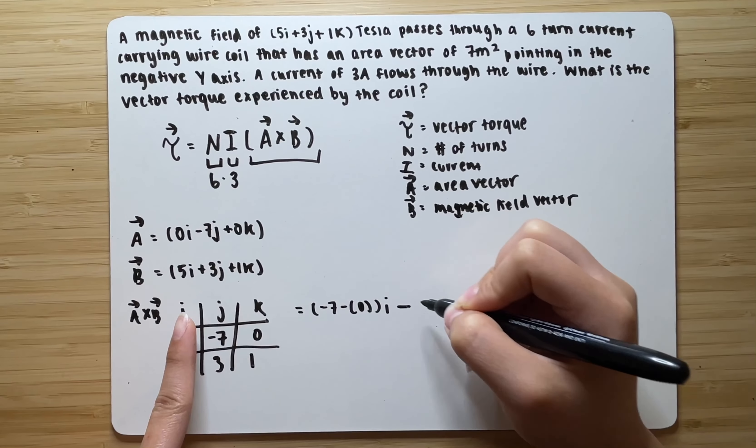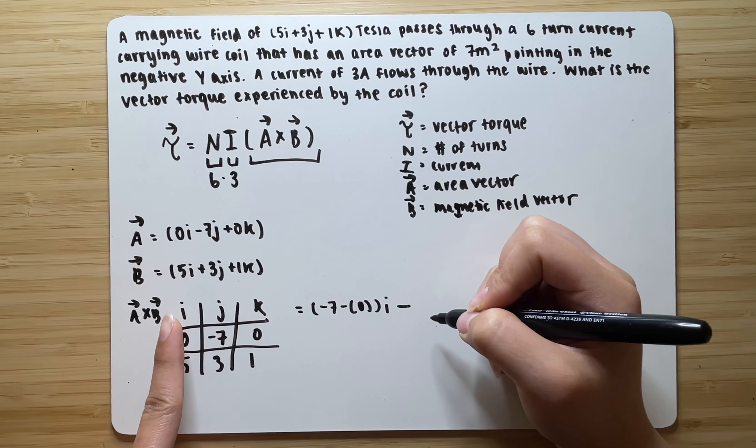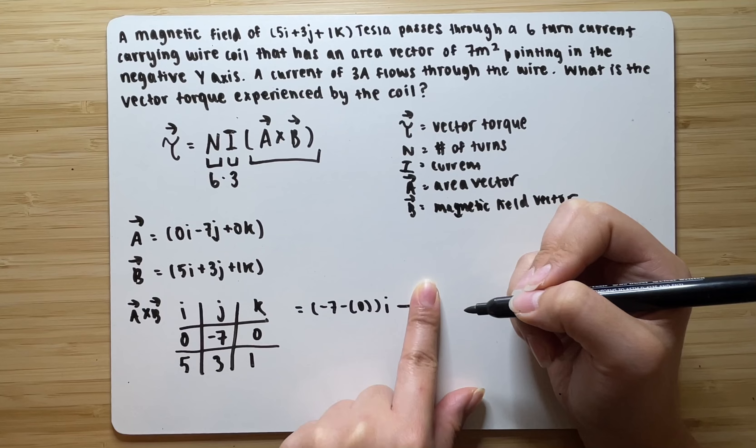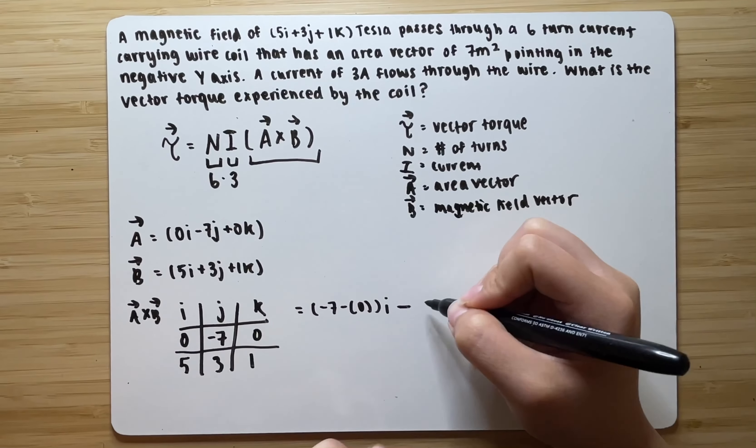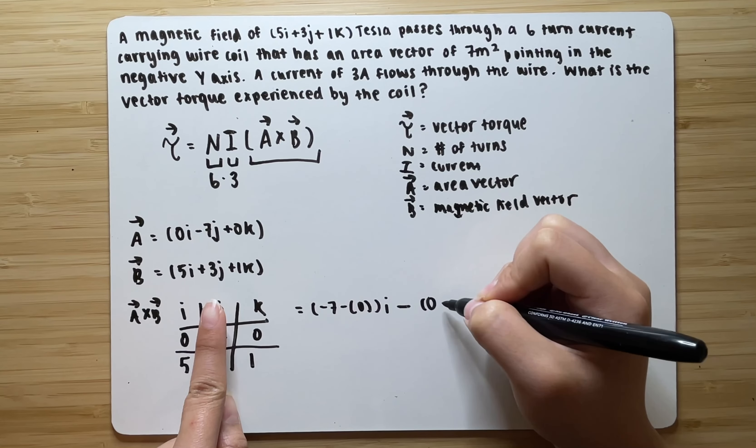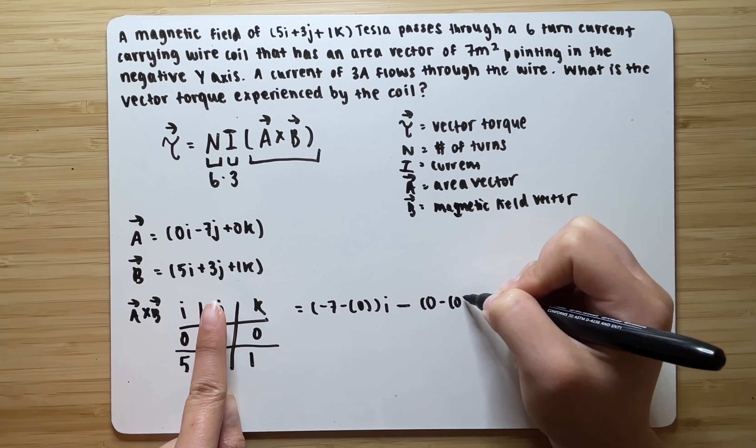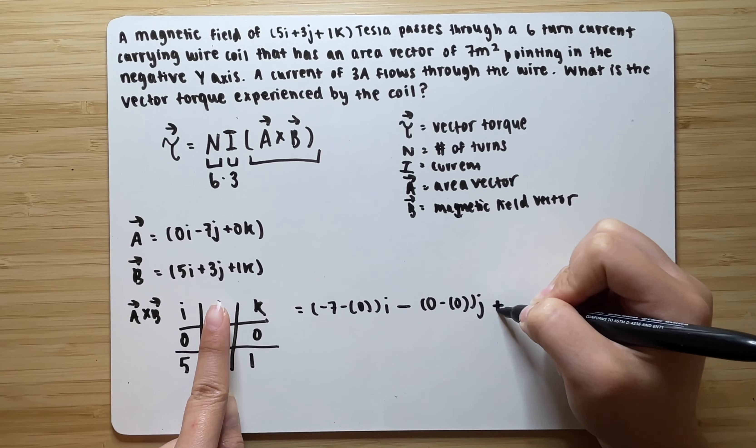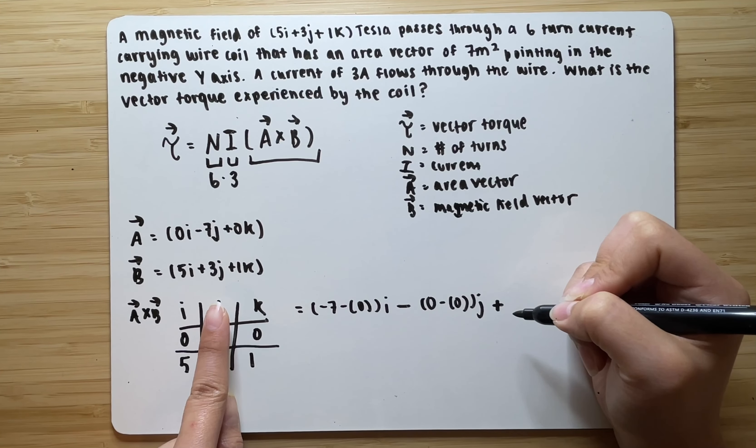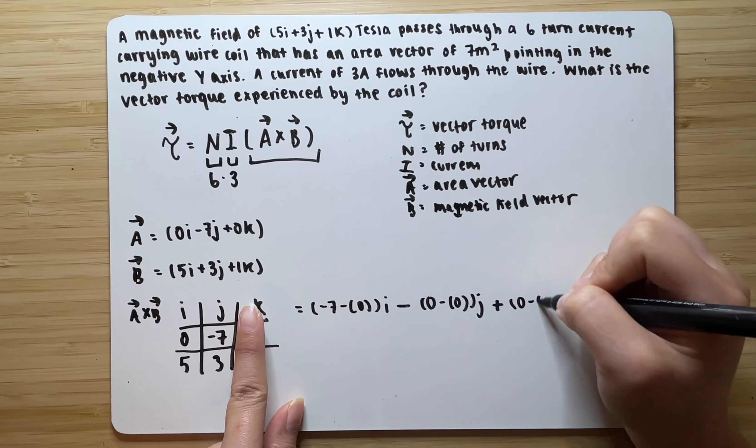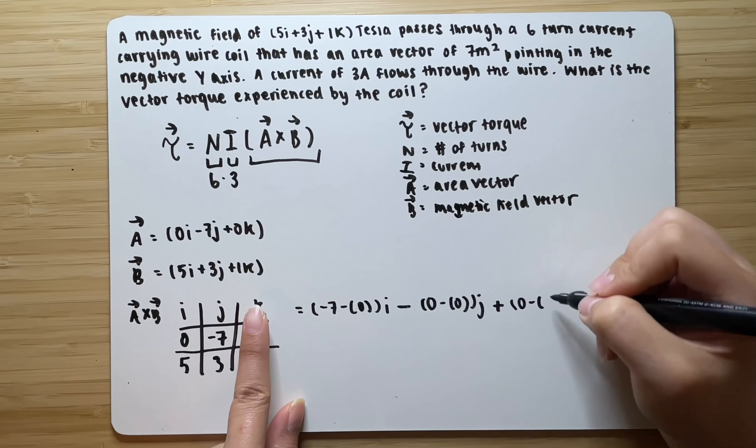Always put a negative over here before you start your j. Now to find the j component of the cross-product, you cover the j. 0 times 1 is 0. 5 times 0 is 0. So, this will be your j. Once you're done with the j, always add a plus before you start your k component. So cover your k component. 0 times 3 is 0 minus 5 times negative 7 is negative 35.